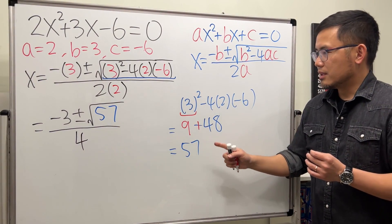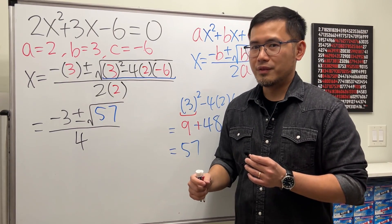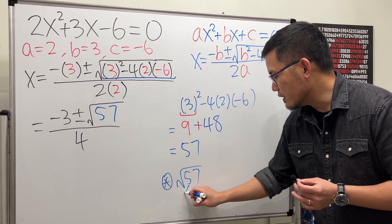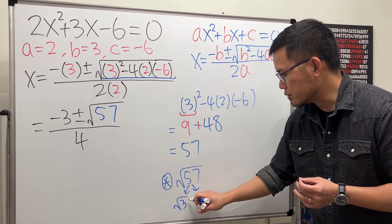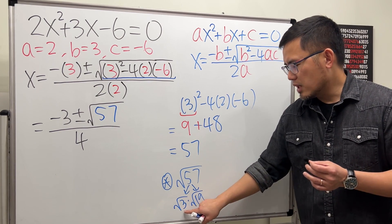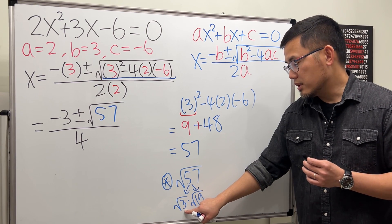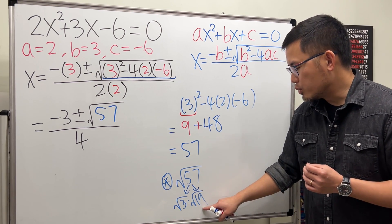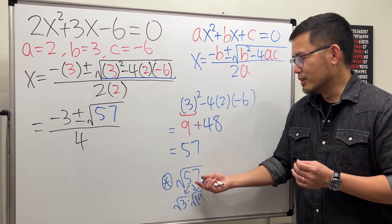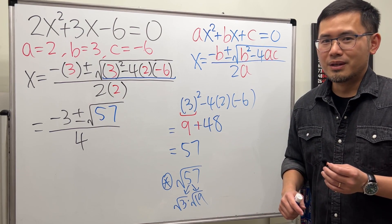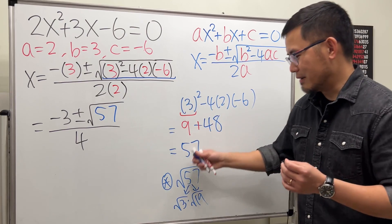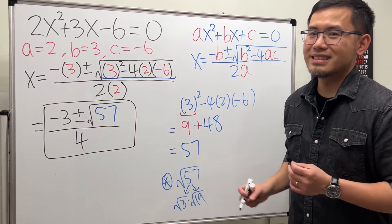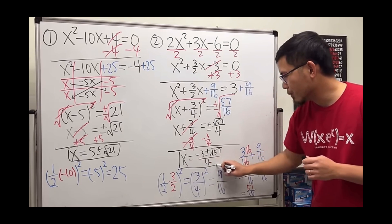Now we try to simplify square root of 57. What times what gives 57? 3 times 19 gives 57, so that's square root of 3 times square root of 19. But is square root of 3 a nice number? No. How about square root of 19? Also no. So no matter what we do, we cannot simplify this. If it's not simplifiable, just leave it. The final answer is negative 3 plus or minus square root of 57, all over 4.